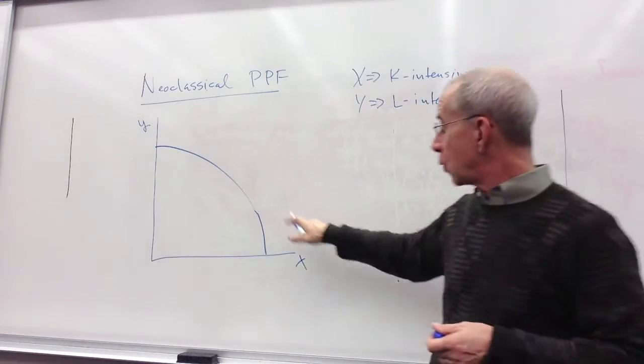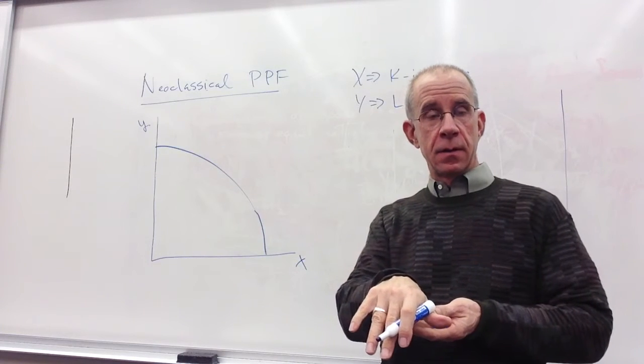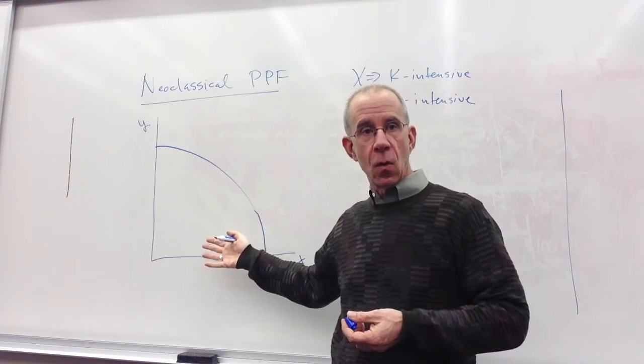So graphically what you can see is that this is a bowed-out PPF, sometimes referred to as concave to the origin.